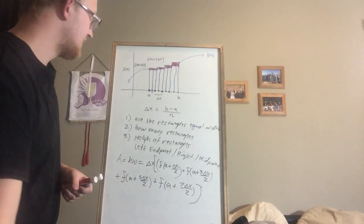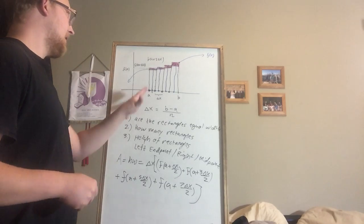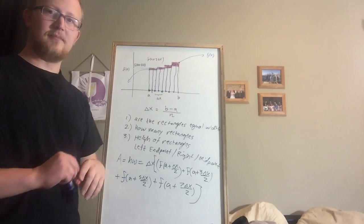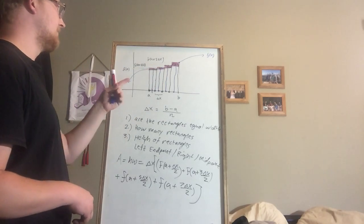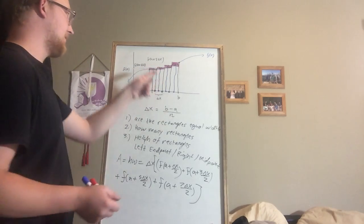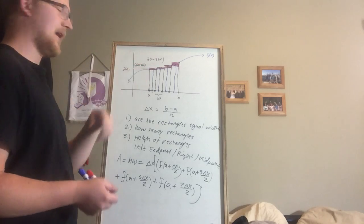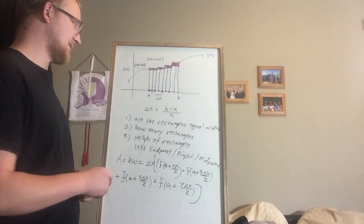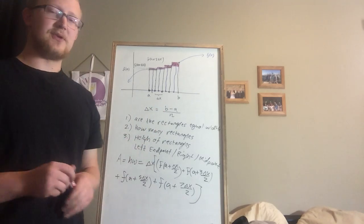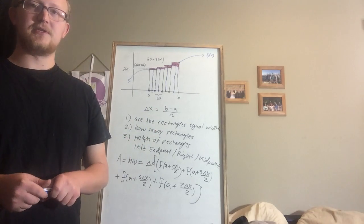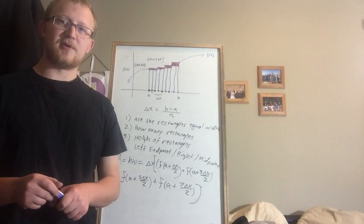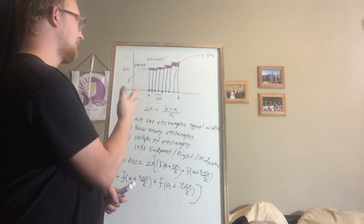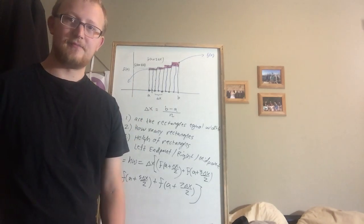In this section we're only going to be using flat-topped rectangles. There are other methods where you can use slanted-topped shapes, but we won't cover those here. I'll put out some videos about specific problems, but hopefully this helps you understand how we are finding area under the graph. Thanks.